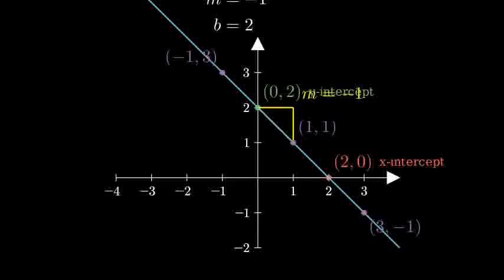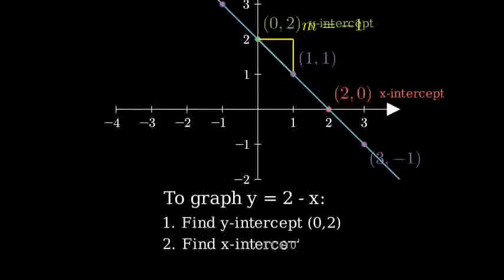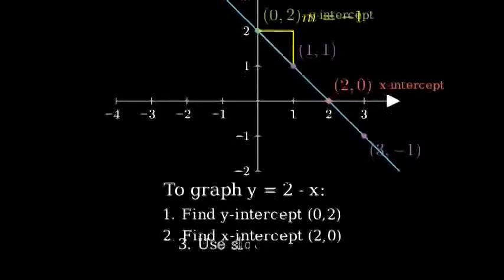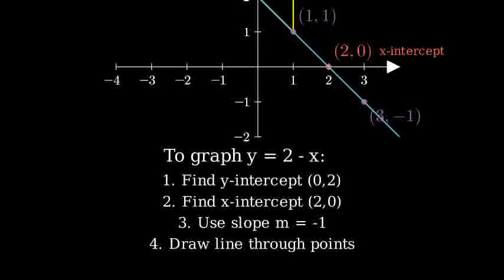Each point follows our slope of negative 1. To summarize, we graphed y equals 2 minus x by first finding the y-intercept at (0, 2), then finding the x-intercept at (2, 0), and using the slope of negative 1 to verify our line. The result is a straight line that decreases at a constant rate as x increases.